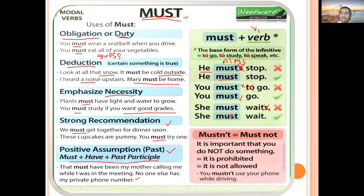'She must wait' is correct. The contracted negative form is 'mustn't', pronounced as 'mustn't', meaning 'must not'. It expresses prohibition — something not allowed or something that shouldn't be done. Example: 'You mustn't use your phone while driving' — meaning you are not allowed to use your phone while driving.